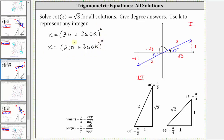While these two expressions do give all the solutions, we can write a simpler single expression that gives all the solutions by recognizing that the cotangent function has a period of 180 degrees. Notice how the terminal sides of the angles point in the opposite direction. So if we start with 30 degrees and then add 180 degrees, we get the angle in the third quadrant of 210 degrees. And then adding another 180 degrees gives the next positive angle in the first quadrant coterminal to 30 degrees. So a simpler way to express all solutions is x equals 30 plus 180k degrees.